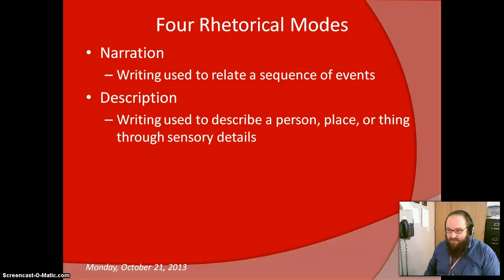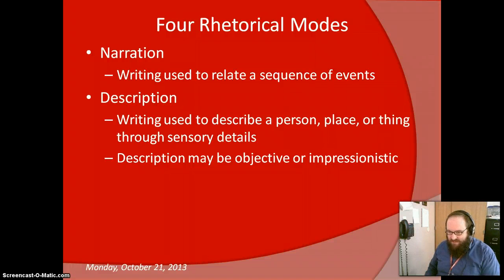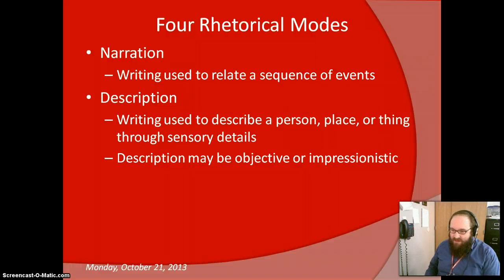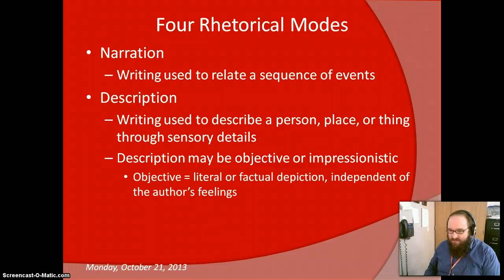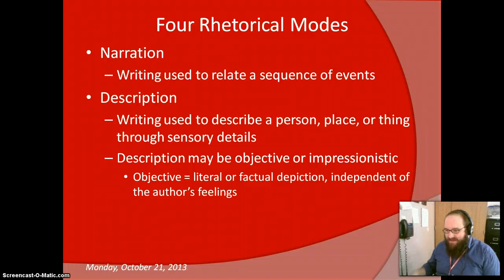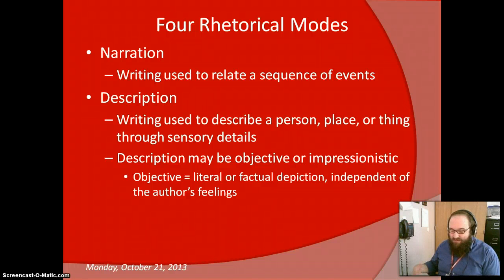Description. That's the next one. Description is writing used to describe a person, place, or thing through sensory details. Description may be objective or impressionistic — a couple of different ways for the descriptive mode to be used. The objective descriptive mode is when you are literal or factual in your depiction — that is, independent of the author's feelings. When you want to describe something just as it is or appears to be without providing any sort of personal perceptions of it, that is an objective description.